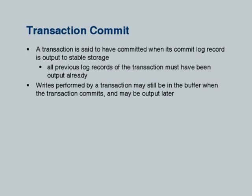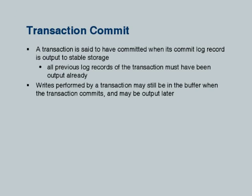When does a transaction commit? Commit has to be atomic, and the atomic commit is said to happen when the commit log record hits the log on stable storage. The log is written sequentially, which means all log records of the transaction are on stable storage when the commit is there. At this point, writes performed by the transaction may still be in the buffer — the database copy is not yet updated by output, and that is acceptable.